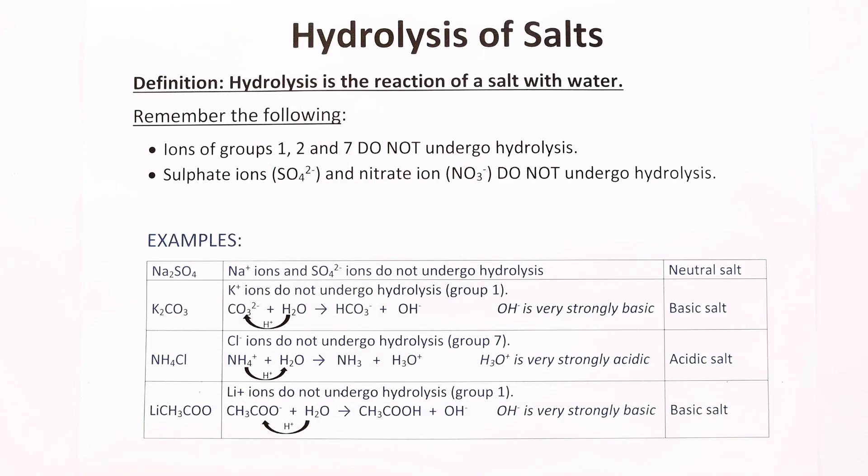You only need to know two rules. The ions of groups 1, 2, and 7 do not undergo hydrolysis. For example, sodium ions, magnesium ions, chloride ions. As well as that, sulfate ions and nitrate ions do not undergo hydrolysis. This is the easiest way to remember which ions would undergo hydrolysis and which ones wouldn't.